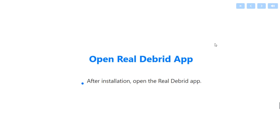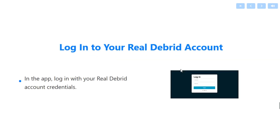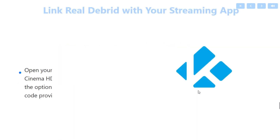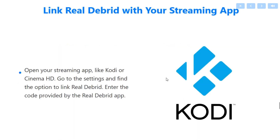After installation, open the Real Debrid app and log in with your Real Debrid account credentials. After that, open your streaming app such as Kodi or Cinema HD.